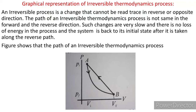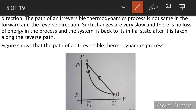Now see the graphical representation of an irreversible thermodynamic process. An irreversible thermodynamic process is a change that cannot be retraced in the reverse or opposite direction. This is the PV diagram of an irreversible thermodynamic process. The path of an irreversible thermodynamic process is not the same in the forward and reverse directions.